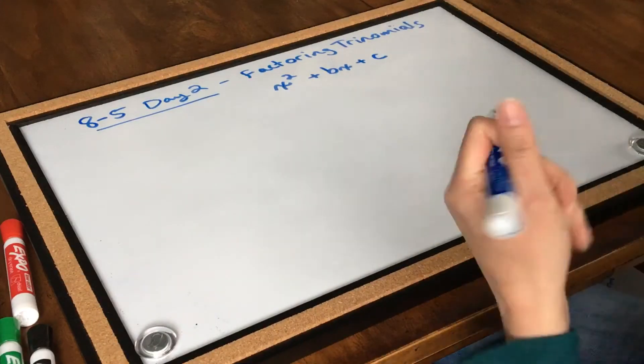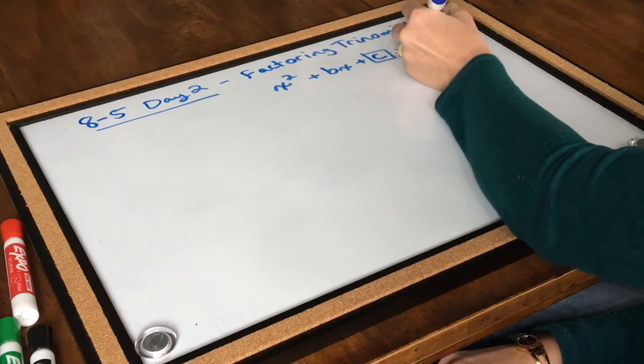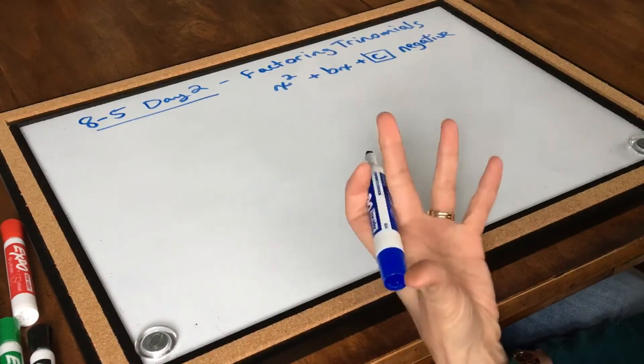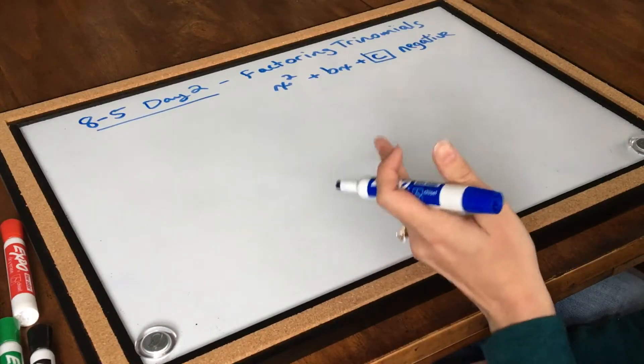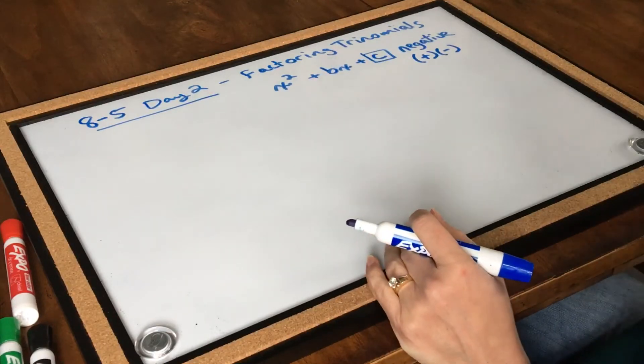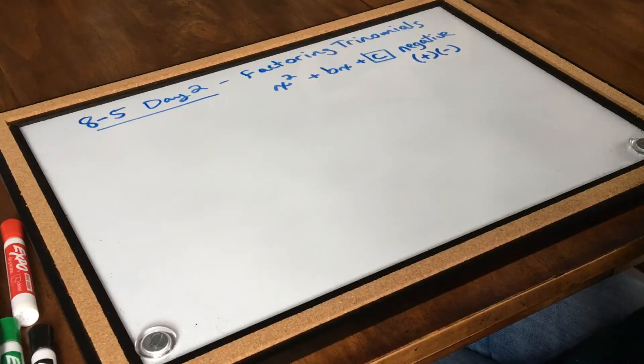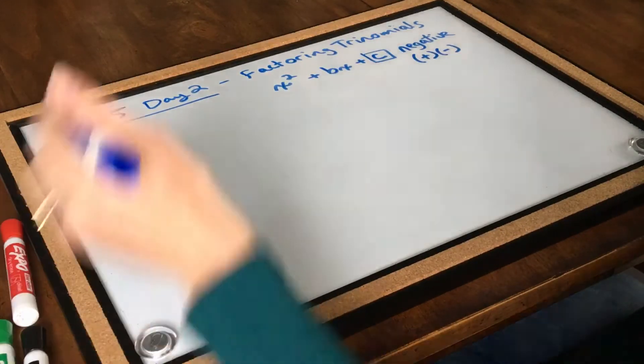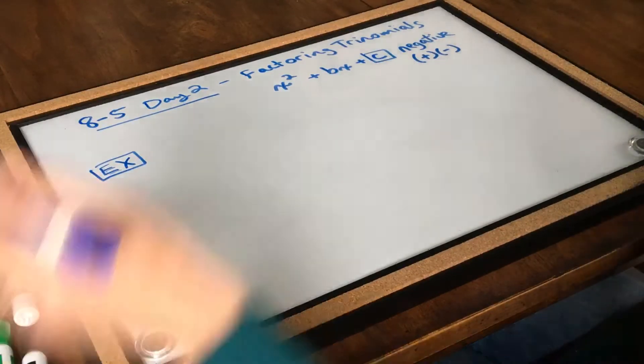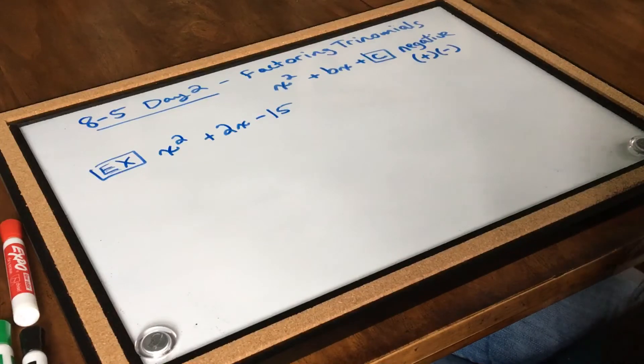So today we're going to look at factoring trinomials, and this time we're going to look at situations where our third term is negative. So when our third term is negative, it's a product of two factors. In order to get a negative number as a product, you need to have a positive number times a negative number. So if our third term is negative, we're always going to have one positive and one negative factor. Let's take a look at an example. I'm working an example on page 501, this is x squared plus 2x minus 15.